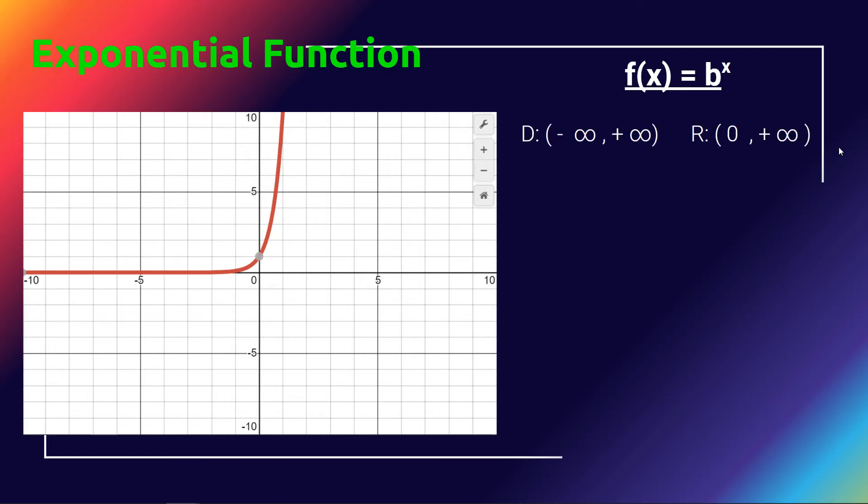The domain is all real numbers, but the range is 0 (not inclusive) to positive infinity. As you can see on the graph, it looks like this graph is laying on the x-axis, but it is actually getting very close to the x-axis and not actually touching or crossing it.